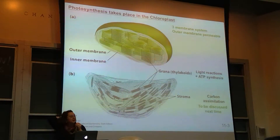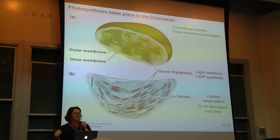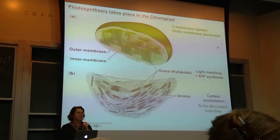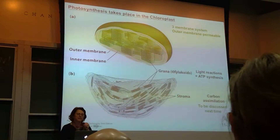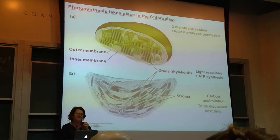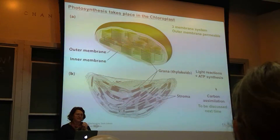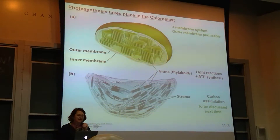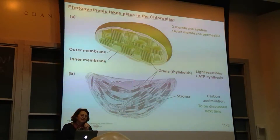Where does photophosphorylation take place? Oxidative phosphorylation takes place in the mitochondria, and reductive photophosphorylation takes place in the chloroplast. Similar to the mitochondria, you have a number of membranes — an outer membrane which is permeable, then an inner membrane, then stacks called grana, which are thylakoid membranes. It's on these membranes where you have the enzymes involved in light reactions and ATP synthesis. The space analogous to the matrix is called the stroma, and inside the grana is called the lumen.